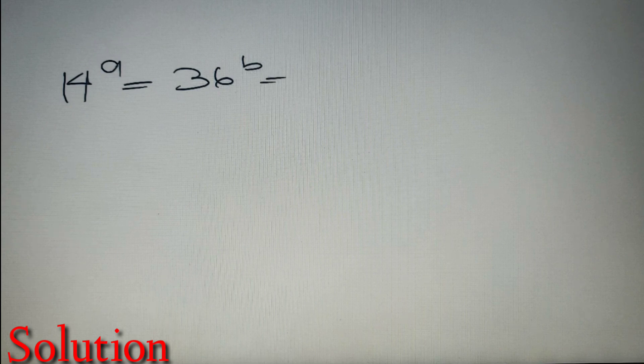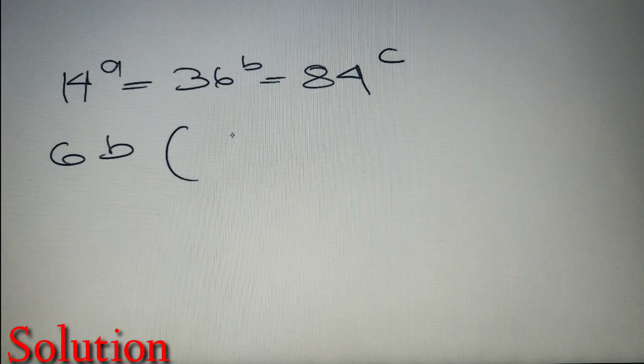Now according to the given problem, 14 raised to power A is equal to 36 raised to power B which is also equal to 84 raised to power C, and we have to find out the value of 6B into 1 by C minus 1 by A.